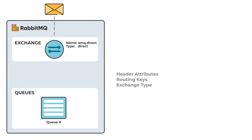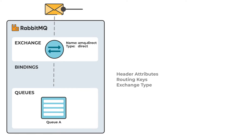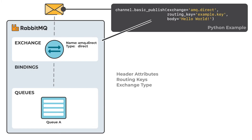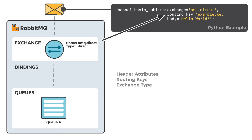From the queue's perspective, you can check which exchanges and routing rules are linked to this specific queue. These links are called bindings. A binding links the queue to an exchange, while the routing key is like an address for the message. This is mainly what the exchange looks for when deciding how to route the message to queues.